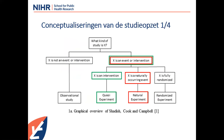We identified four different conceptualizations in the literature. The most famous is Shadish, Cook and Campbell, who wrote a textbook on these things. They say if you're looking at a naturally occurring event, it's a natural experiment; if X is an intervention, it's a quasi-experiment. That's how they define the difference between the two and separate them from observational studies and RCTs.